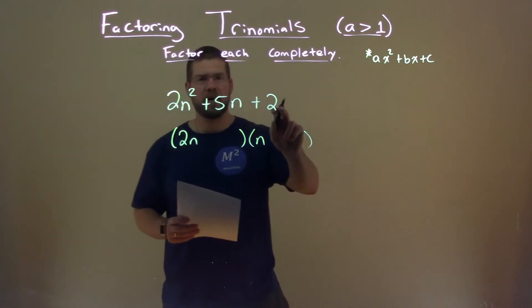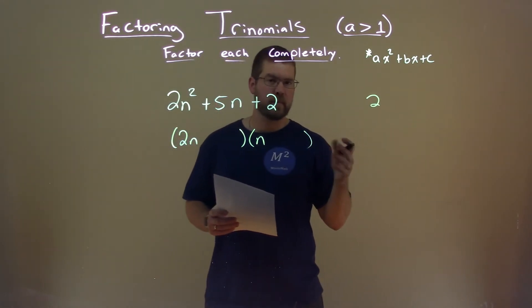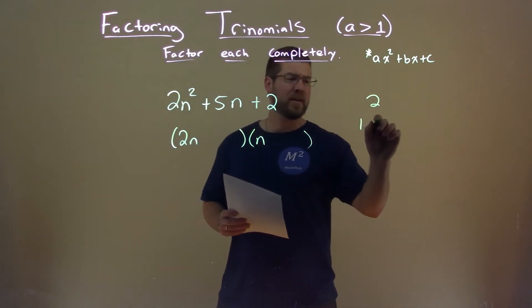We then have to look at our c value, which is this 2. And we think, what two numbers multiply to be 2? We know they both have to be positive because our b value here is positive. And that is just 1 and 2.